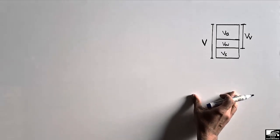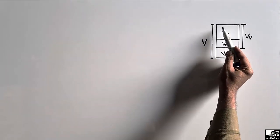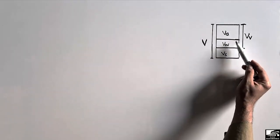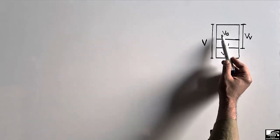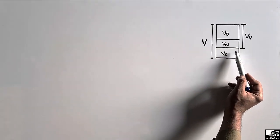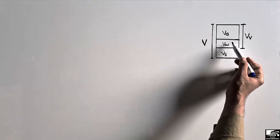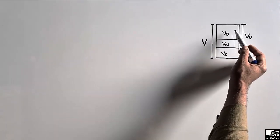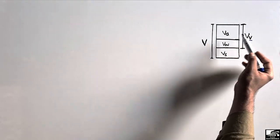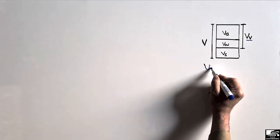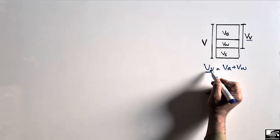First of all, consider that this is any soil sample and this is the phase diagram for the soil mass. This whole box shows the soil. V represents the total volume of the soil mass. Vs shows the volume of solids, Vw shows the volume of water, and Va shows the volume of air present in the soil mass. Vv, which is the volume of voids, is the combination of the volume of air and volume of water — so Vv equals Va plus Vw.